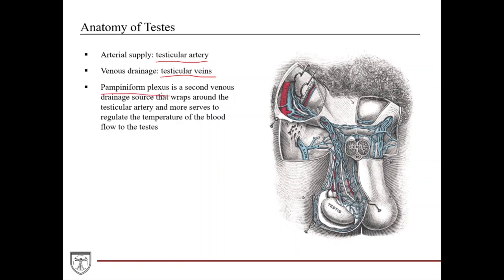There's also a second vein called the pampiniform plexus, which is almost like a web or net-like network of veins that wraps around the testicular artery. The pampiniform plexus serves primarily to regulate the temperature of the blood flowing into the testes via the testicular artery. The main function is to cool the blood, because the ideal temperature for spermatogenesis is about two to four degrees below your core body temperature, so you want to cool the blood just a little bit as it goes into the testes.